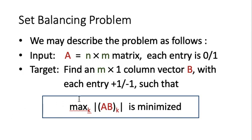For this problem, we may describe it as follows. Suppose that we have an input matrix A. This A is a 0-1 matrix, so each entry is either 0 or 1, and A is an n by m matrix with n rows and m columns. Each row corresponds to a certain skill, and each column corresponds to a certain student. An entry is 1 if and only if the corresponding student has the corresponding skill.